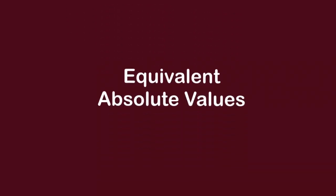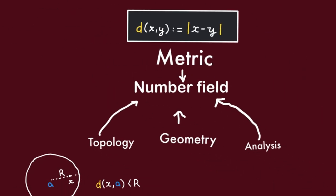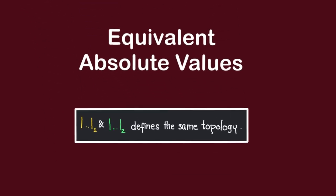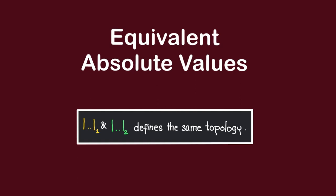Previously, we have defined what it means for two absolute values to be equivalent. Recall that since we want to use absolute values to put topology on a number field, it makes sense to define two absolute values to be equivalent if and only if they define the same topology.